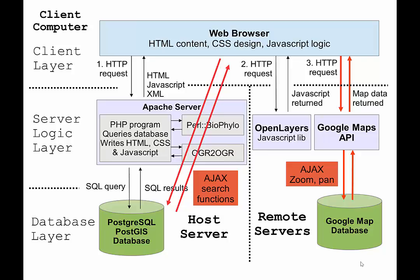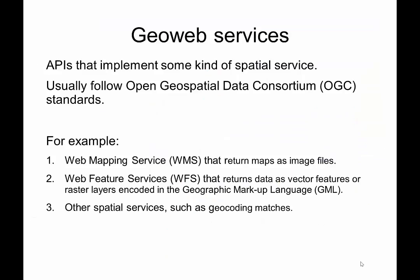Towards the end of developing Entangled Bank I actually implemented a small amount of API and AJAX-based queries that effectively cut out the middle section and allowed the web browser to directly communicate with the Postgres database. So we now know how APIs work and what we use them for. What about the GeoWeb?